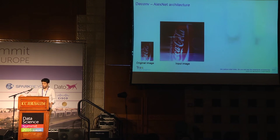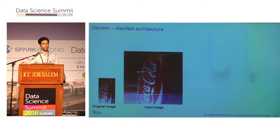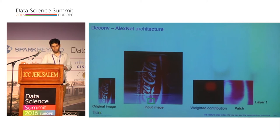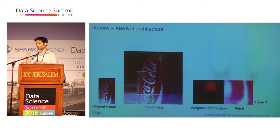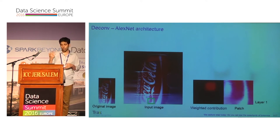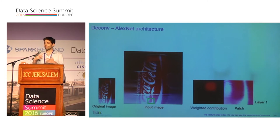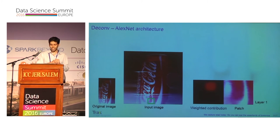As an example, on the left side you can see the original image, and since we used the AlexNet architecture, we resized it to a square. On the right side, you can see the patch that refers to the strongest neuron at layer one, and on its left, the element that contributed most to the neuron activation — in this case, the red color. This is not surprising, because in the first layers we expect features like color and simple edges. You can also see a green rectangle on the input image indicating the patch location.